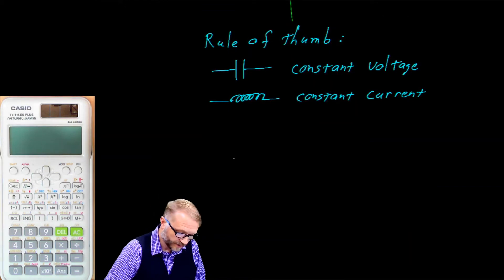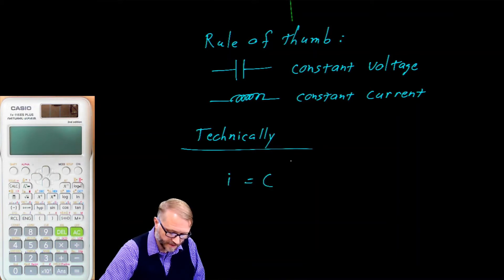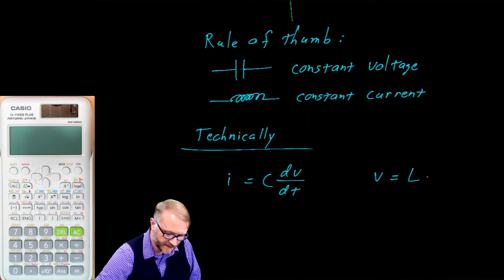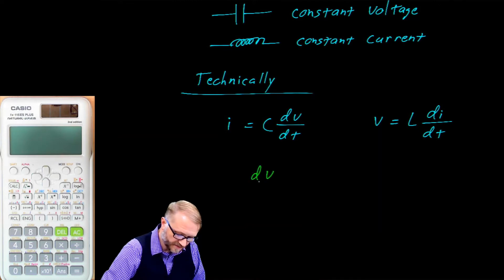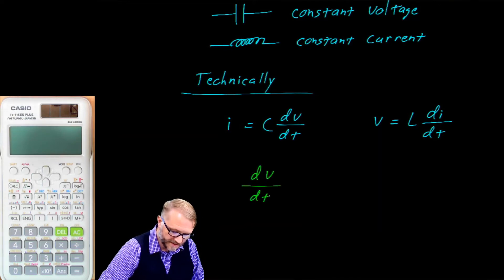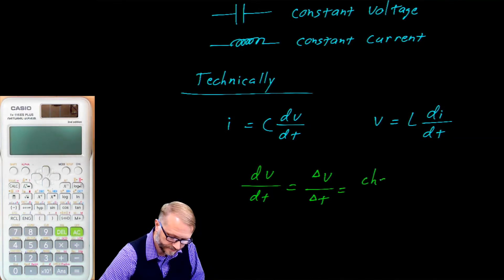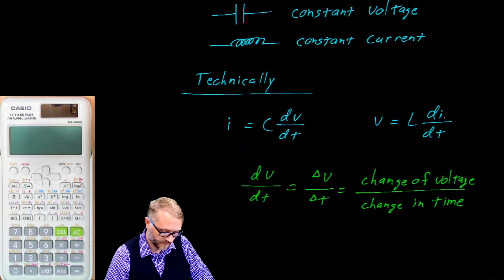If we want to get more precise, we can use calculus. The current on a capacitor is i = C · dv/dt — the capacitance times the change in voltage per unit time. For the inductor, the voltage is v = L · di/dt — the inductance times the change in current over the change in time. If your calculus is rusty, dv/dt simply means a change in voltage over a change in time.